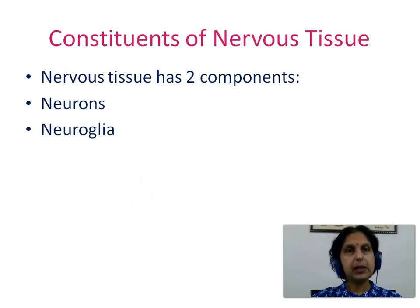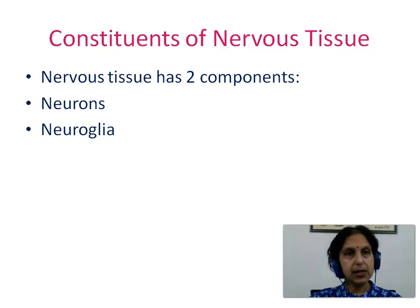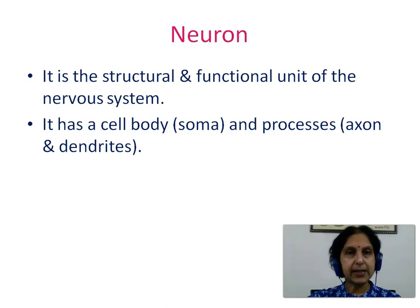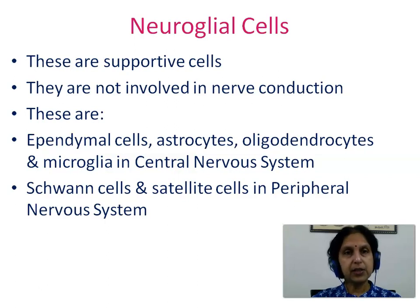Let us see the constituents of the nervous tissue. It contains two components: the neurons and the neuroglia. The neuron is the structural and functional unit of the nervous system. It has a cell body or soma and processes which are axon and dendrites. The neuroglial cells are the supportive cells; they are not involved in nerve conduction. These include ependymal cells, astrocytes, oligodendrocytes, and microglia in the central nervous system, and Schwann cells and satellite cells in the peripheral nervous system.